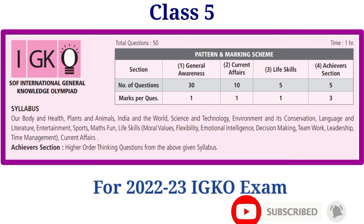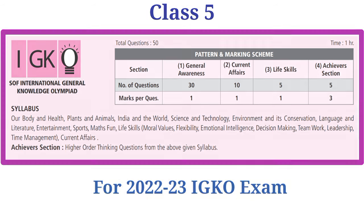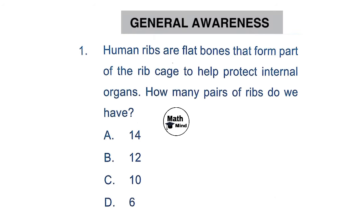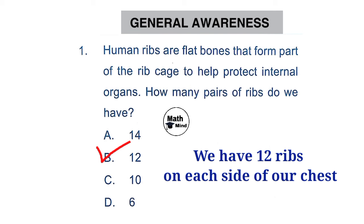It will be followed by IGKO Class 5 2022-23 exam. General Awareness, Question 1: Human ribs are flat bones that form part of the ribcage to help protect internal organs. How many pairs of ribs do we have? Option B is correct: 12. We have 12 ribs on each side of our chest. The ribcage protects the internal parts of our body and provides a definite structure.